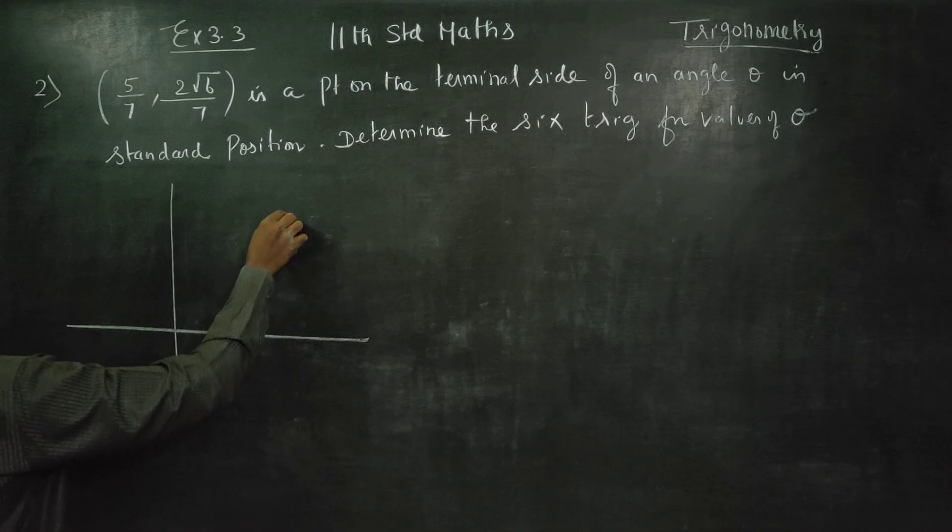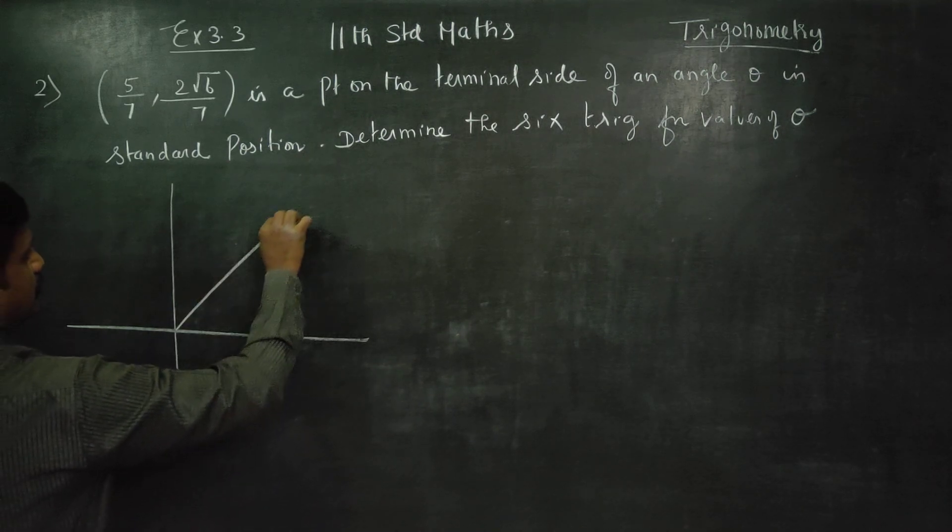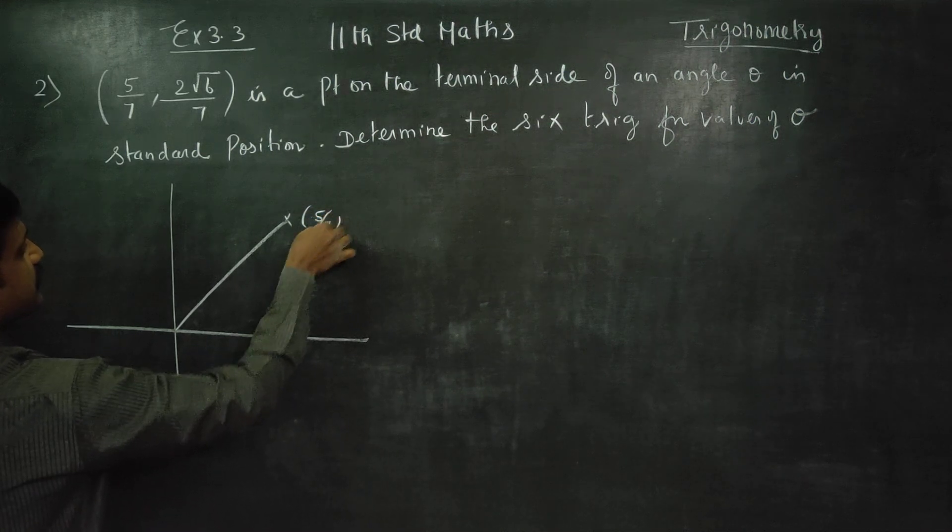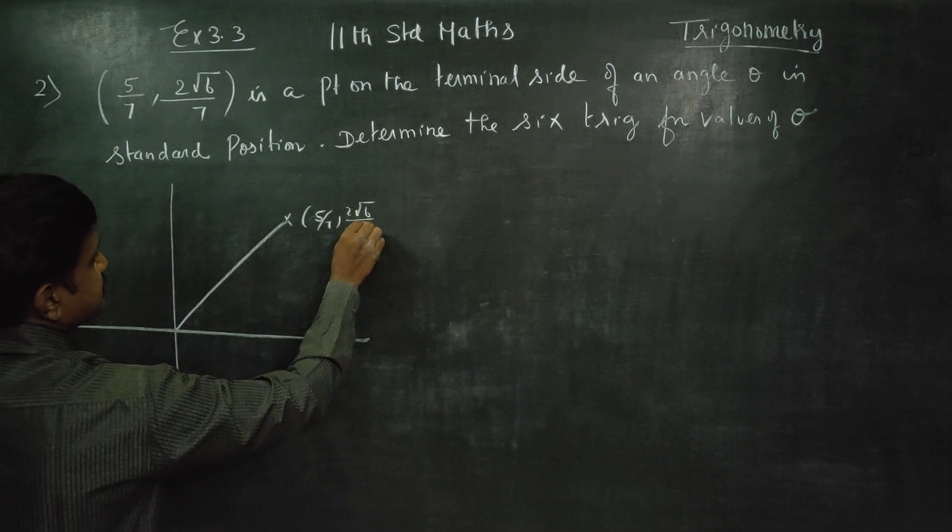Both are positive, that's why the point is in the first quadrant. The point is 5 by 7, 2 root 6 by 7.